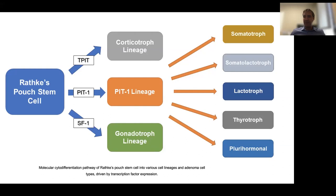There is a more updated classification of pituitary tumors recently proposed by the WHO, based on cell lineages for each adenoma type, driven by transcription factor expressions. From the stem cell, there are three different transcriptional factors: T-Pit, Pit-1, and SF-1. Each gives different cell lineages. The corticotroph lineage is T-Pit — that's where ACTH tumors come from. We also have a silent corticotroph adenoma, which is more invasive but non-secretory. It does not cause Cushing's and does not increase ACTH levels.